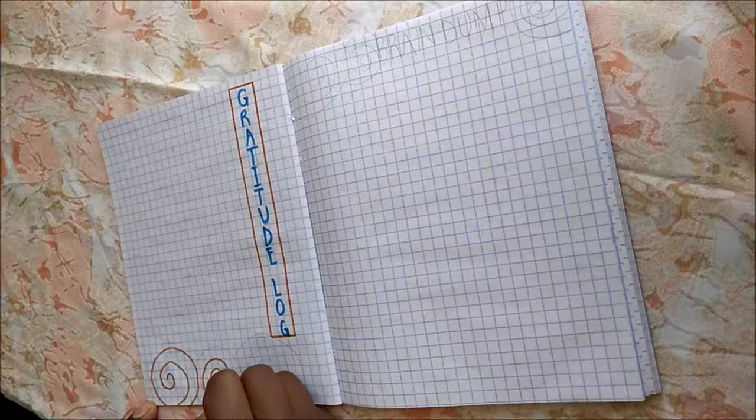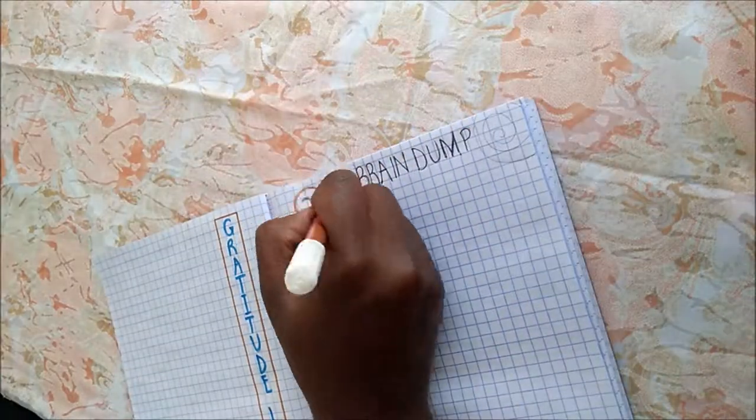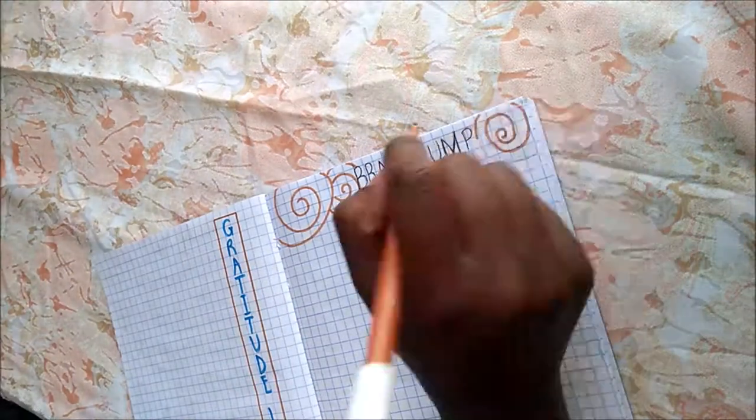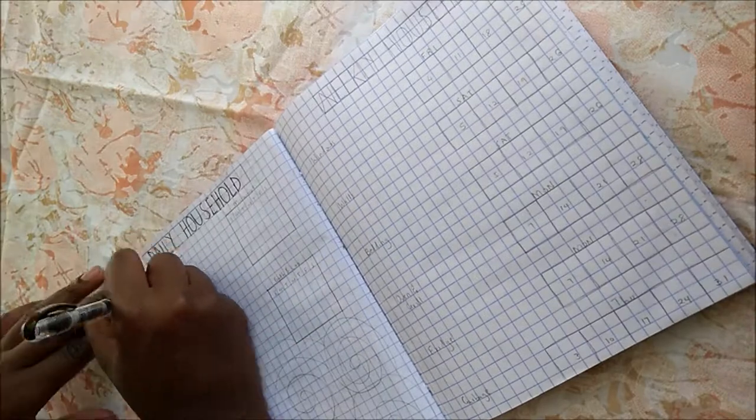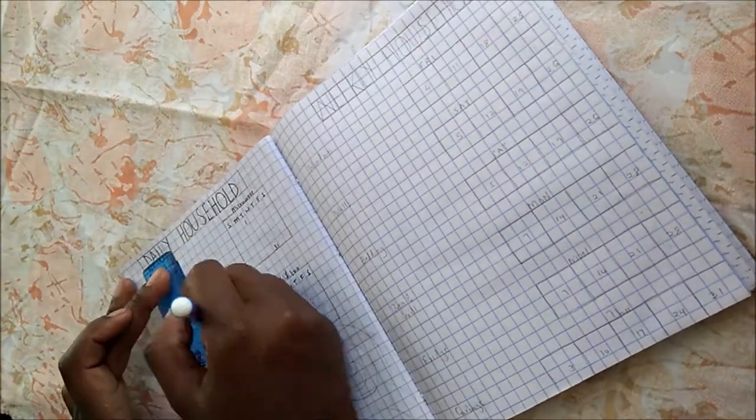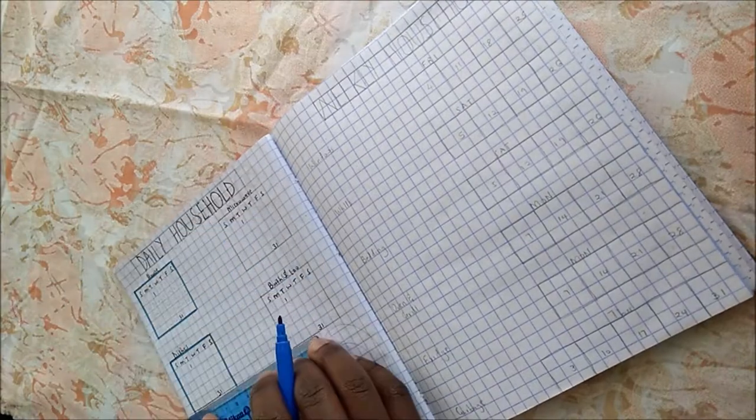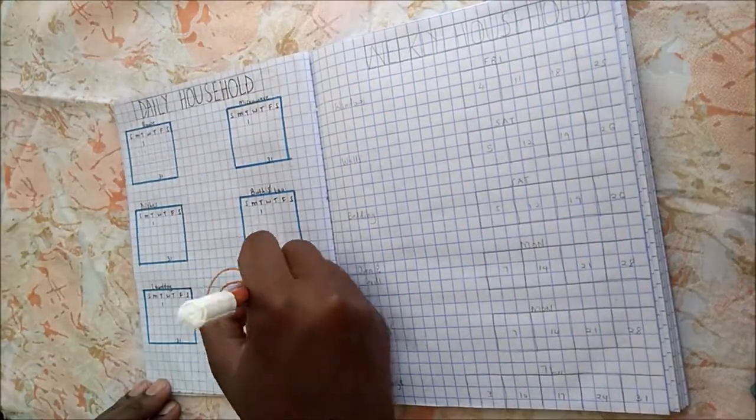Then I have my gratitude log and my brain dump pages, because I cannot journal without these two collections. Then, of course, my daily and weekly household task collection follows. This not only helped me instill some good habits but enables me to do tasks around the house that would otherwise be forgotten.